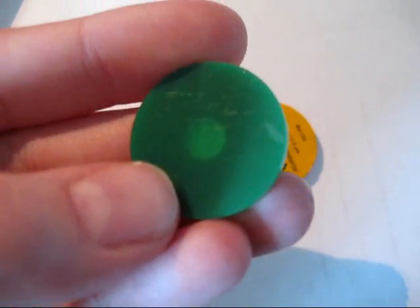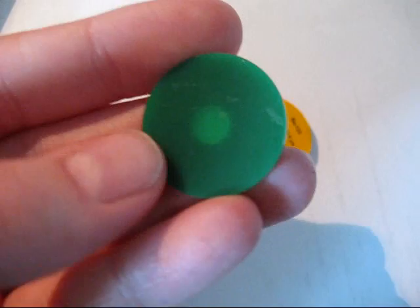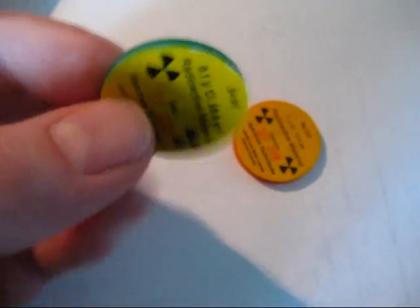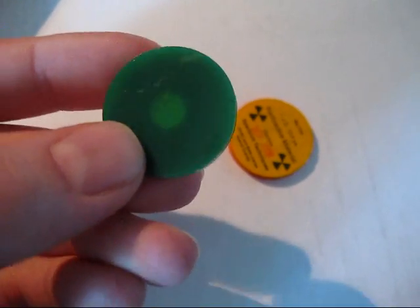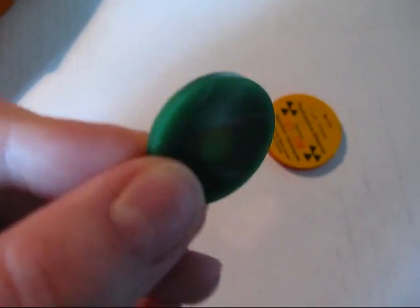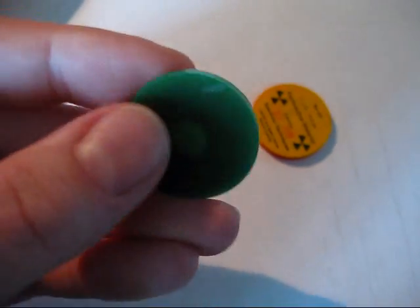So the actual radioactive source is in the center here, in this bit, but of course it has a front side and a back side, so we can imagine that at least half the radiation will come out of the other side. And it will come out of the sides as well.